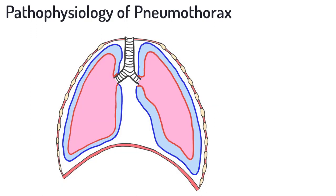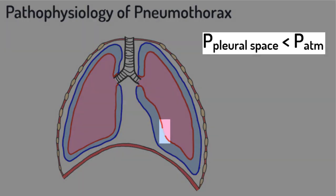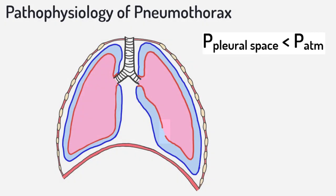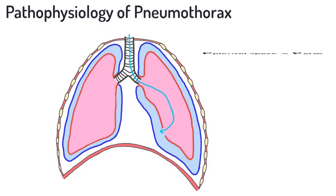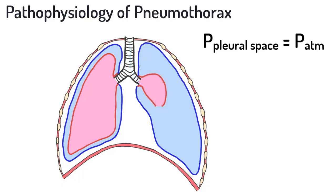As we've discussed, the pleural space is held at a pressure below that of the atmosphere. Thus, if a connection develops between the pleural space and the atmosphere, atmospheric air will rush into the space and equalize the pressure. Once the pleural space is no longer at a sub-atmospheric pressure, the force holding the lung open is lost, and the lung will collapse inward while the chest recoils outward.